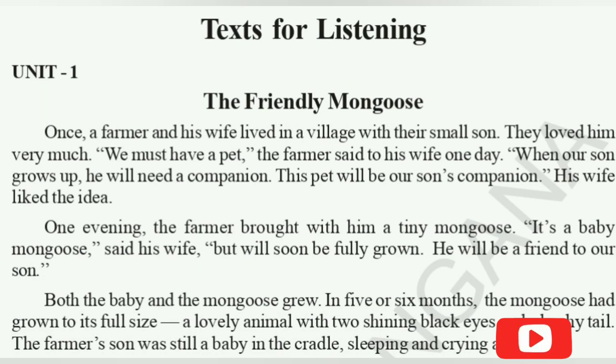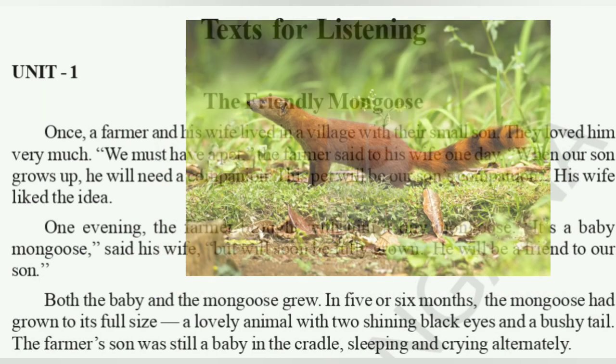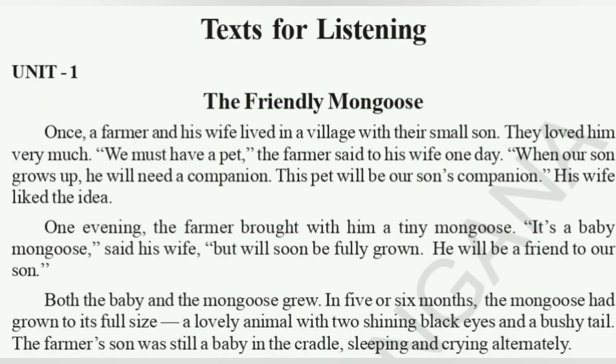Both the baby and the mongoose grew. In five or six months, the mongoose had grown to its full size — a lovely animal with two shining black eyes and a bushy tail. The farmer's son was still a baby in the cradle, sleeping and crying alternately.